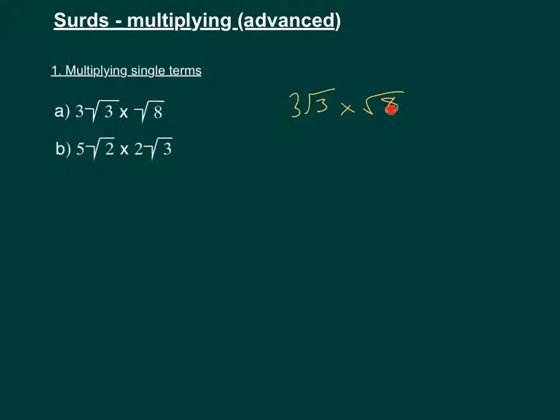So what we'll end up with is 3 times 1, which is 3, root 24, because that's 3 times 8. And then we can simplify this root 24.